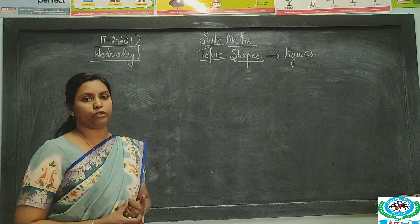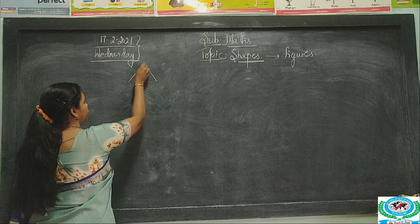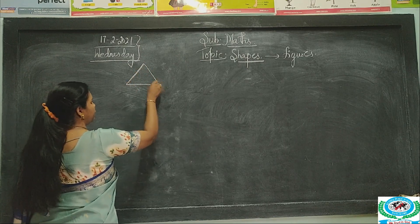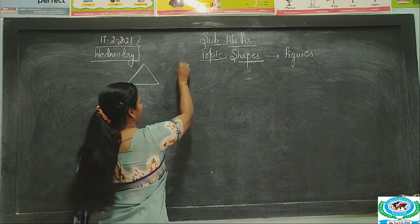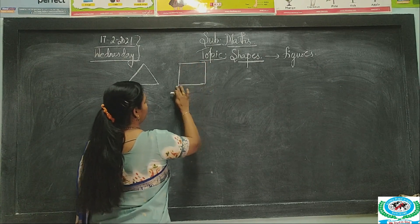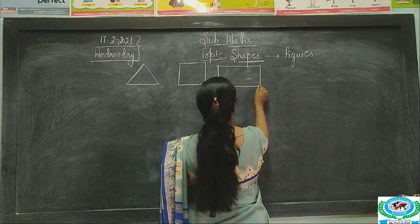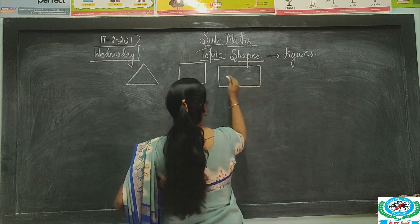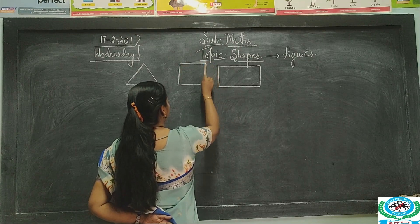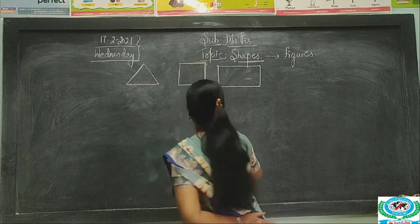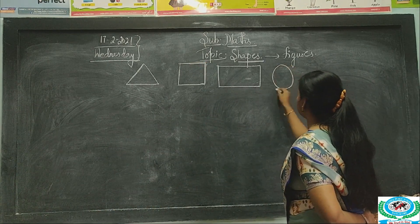What kind of shapes do you have? The first basic shapes are: a triangle, a square, a rectangle, and a circle.